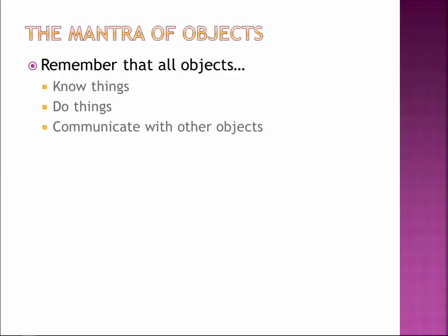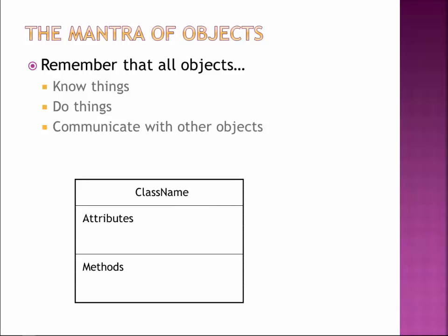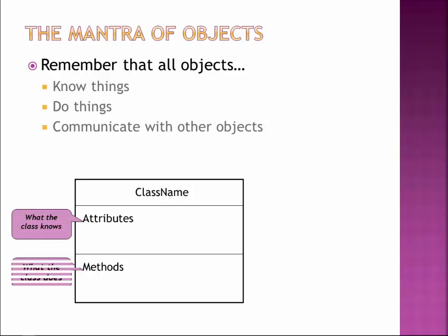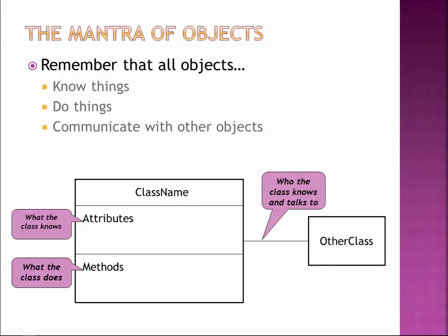The mantra of being an object is: an object should know stuff — it should have data it stores. It should do stuff. And then ideally, it's communicating with other objects. The class is the box inside of there. When objects know stuff, that relates to attributes. When objects do stuff, it relates to methods. And when objects communicate with other classes, that's the references to other classes — one object keeping track of another object through a variable, through saving data.